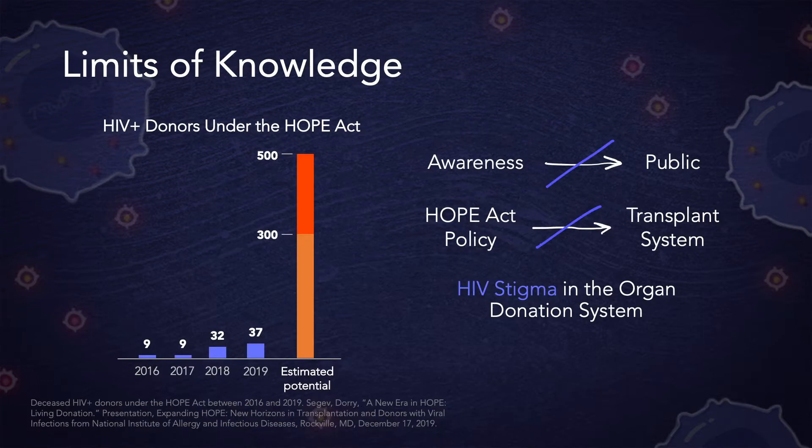Despite this great change, transplants are not reaching their maximum potential of 300 to 500 deceased donors every year. This is because of a lack of awareness in the public, incomplete implementation of HOPE Act policy in the transplant system, and lingering HIV stigma in the organ donation system.